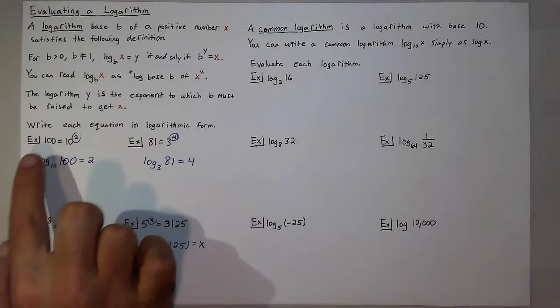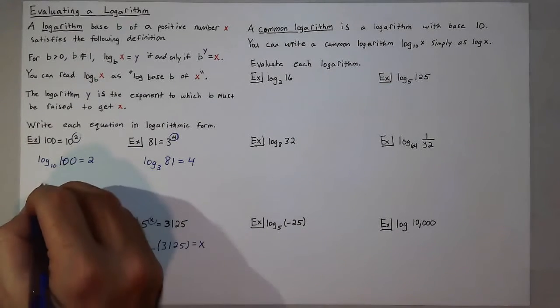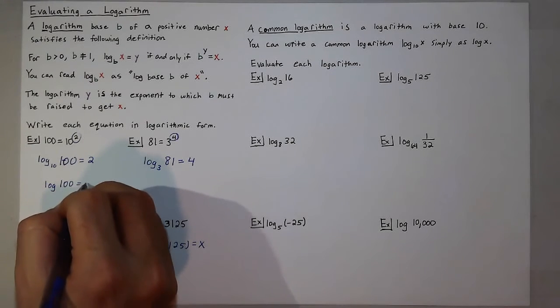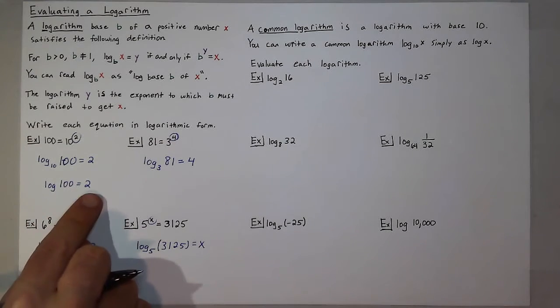So the situation I had over here with log base 10 of 100 is equal to 2, we can rewrite as log 100 is equal to 2. And you should find that key on your calculator. And you can plug in log 100 and it should equal 2.